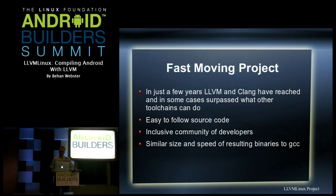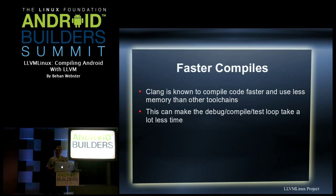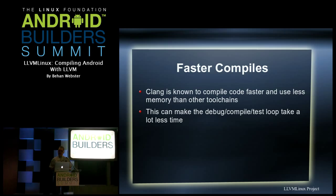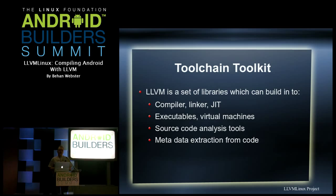There are a few situations where Clang actually produces faster code, but statistically they're pretty close to being the same. One really nice thing, however, is that Clang is considerably faster than GCC when it comes to actually compiling. There's the code-compile-download-test-debug loop that you do as a developer, and if you can cut down your compile times, that loop gets a lot tighter and faster, making your life as a developer considerably easier.